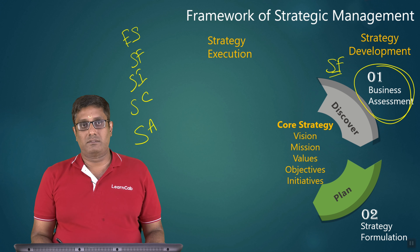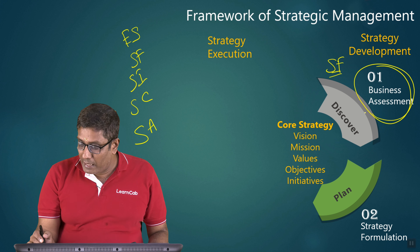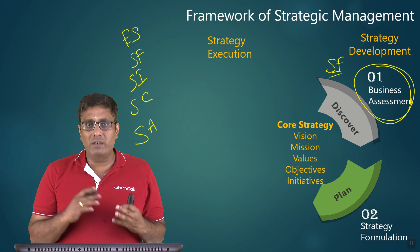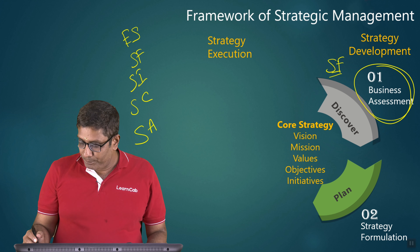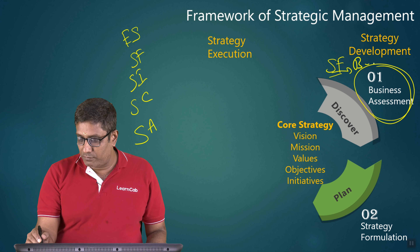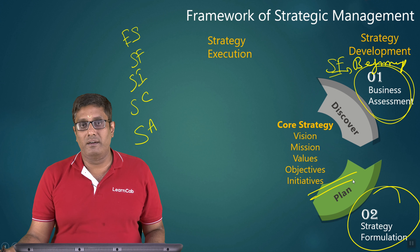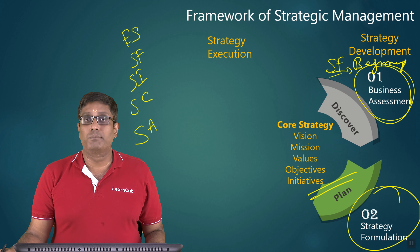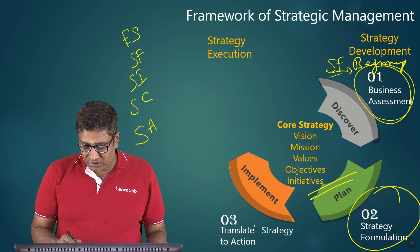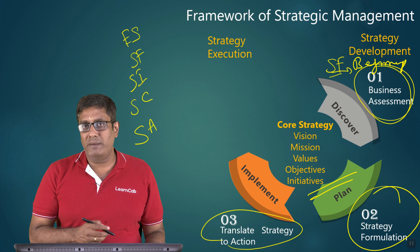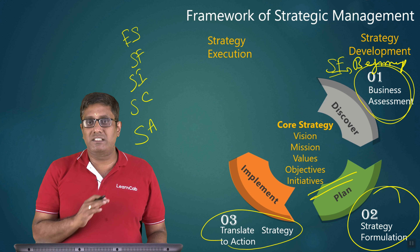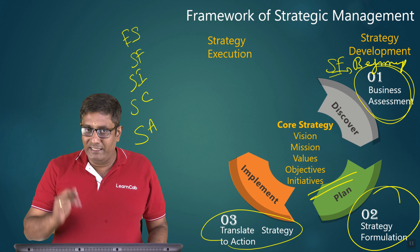Some people say strategic control itself is enough for audit also, so you can take that. For strategic development and business assessment, you should discover what type of business you can do — this is the beginning of strategic formulation. Then you do the real strategic formulation, that is called the business plan. Then implement it — translate the strategy into action.